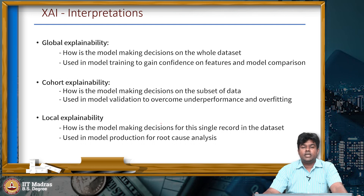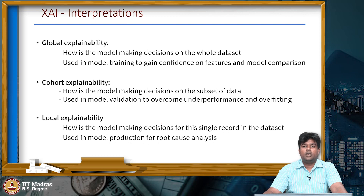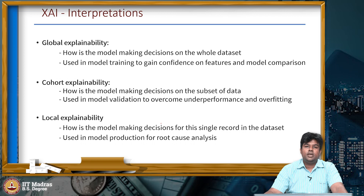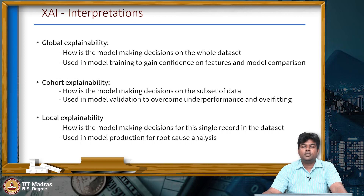We have three different levels of explainability or interpretation in XAI: one at the global level, then at the cohort level, and finally at the local level. All three explainabilities are used at different stages of the model development cycle.